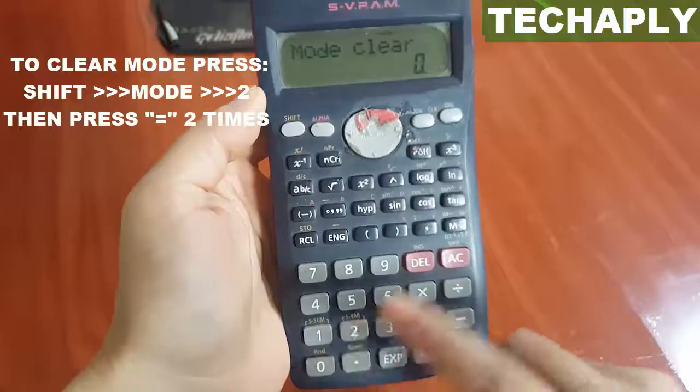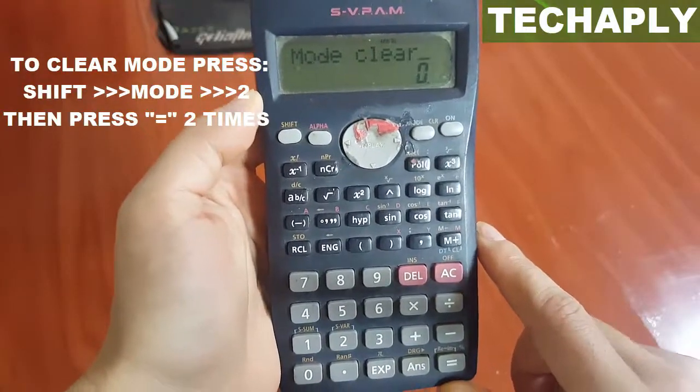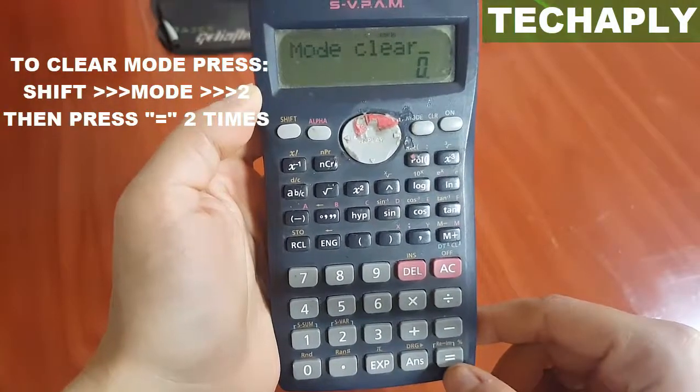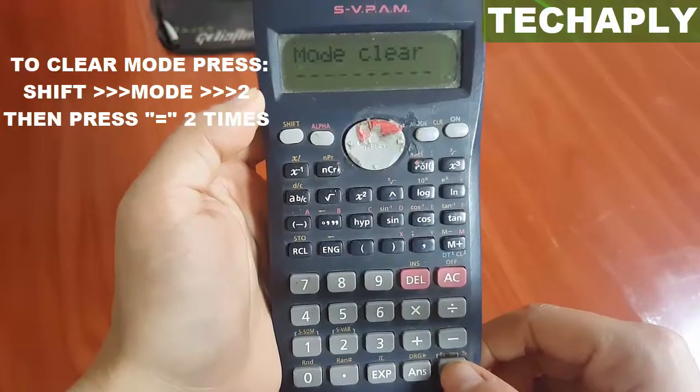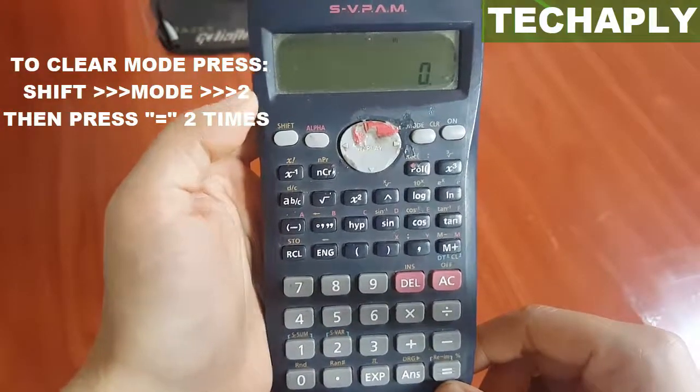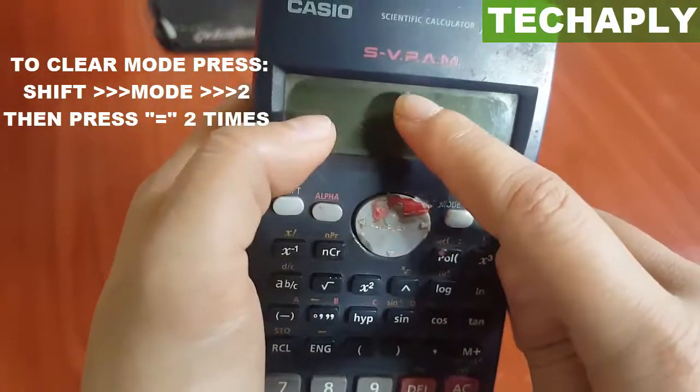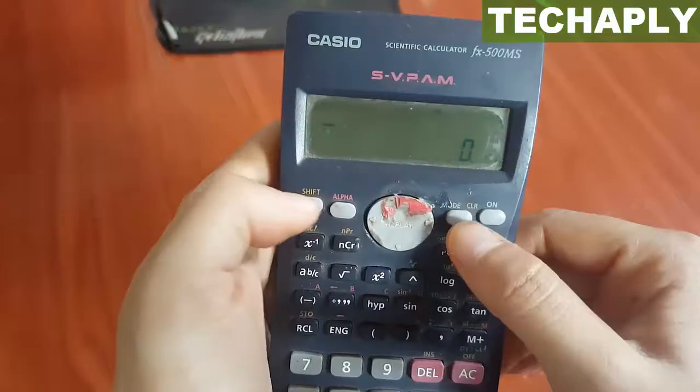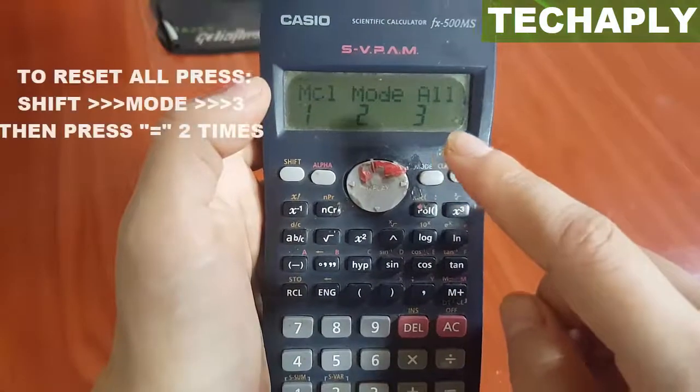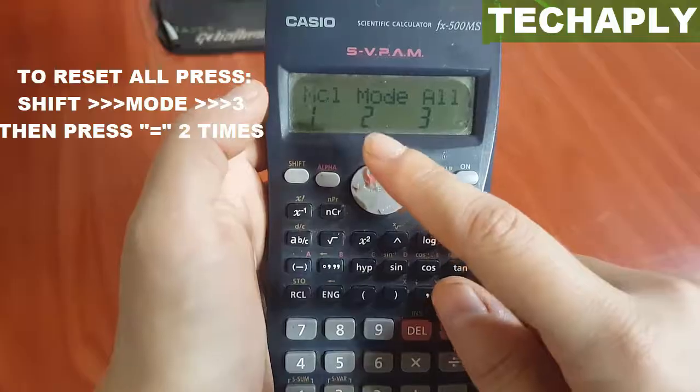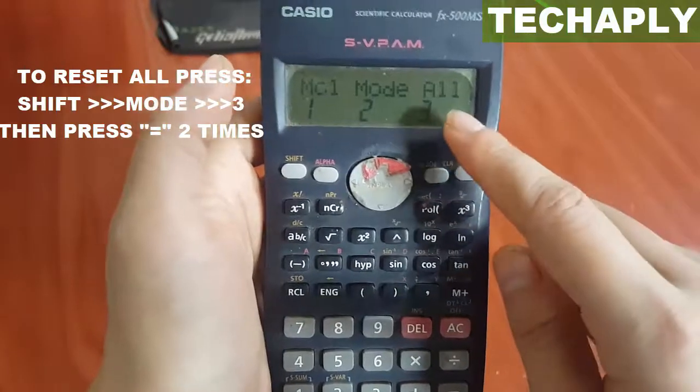...number two here and you're gonna press the equals button twice - one, two. So now as you see, the equation mode has gone already. Now if you want to reset both the memory and the mode, then you want to choose number three.